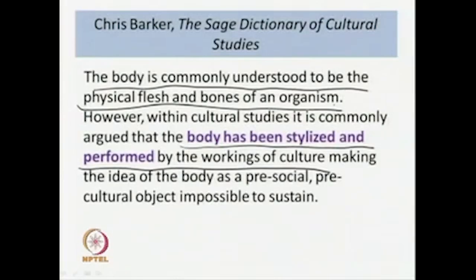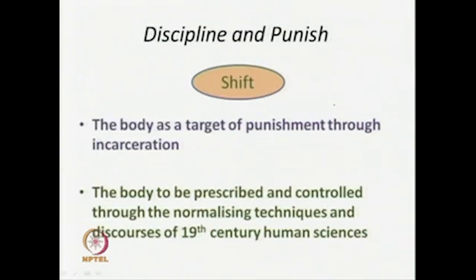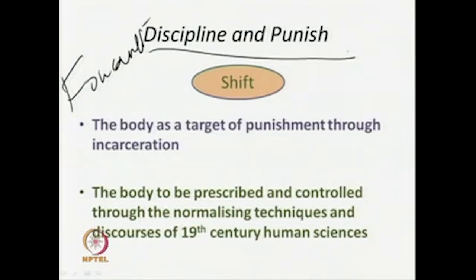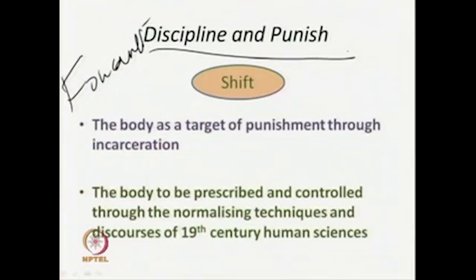Barker argues that the body has been stylized and performed by the workings of culture, making the idea of the body as a pre-social, pre-cultural object impossible to sustain. We then saw, through Michel Foucault's important book Discipline and Punish, where he draws a history of speaking about the body — the discourse about the body and the body as a social entity.